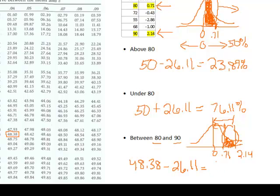We take 48.38 and subtract from that 26.11, and that gives us 22.27%. So 22.27% gives us the area in between those two z-scores and also gives us the percentage of individuals or scores in our distribution that falls between a raw score of 80 and a raw score of 90.